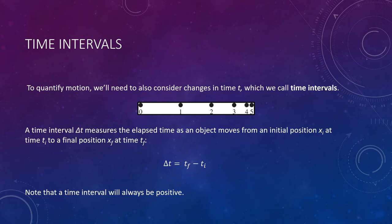To quantify motion, we'll need to also consider changes in time, which we call a time interval. The figure here shows an object that you should be able to recognize as slowing down, since the spaces are getting smaller from left to right. But without any information about time, we have no idea what kind of a slowing down motion this is. For example, if the frames were a second apart, it would be a pretty leisurely slowdown. But if the spacing was only a tenth of a second apart, then this represents something coming to a screeching halt.